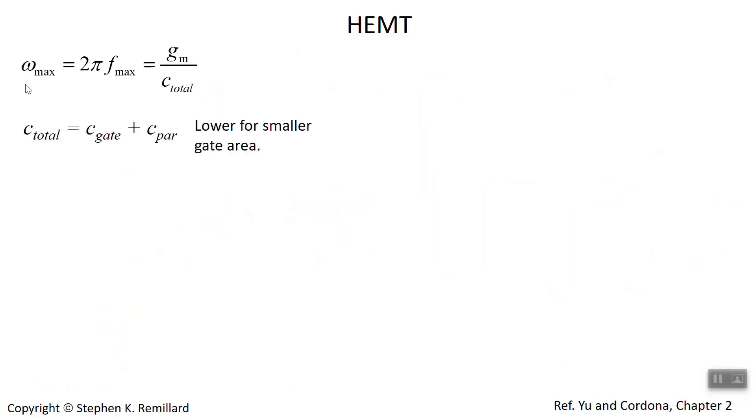The highest frequency that you can use a device, 2π f_highest, is the mutual transconductance divided by the total capacitance. This 1 over RC - the maximum frequency is 1 over RC. Instead of R, we use conductance upstairs: mutual transconductance over the capacitance. The total capacitance comes from the gate and parasitics. If you have a small gate capacitance, you can have a small total capacitance, which gives you a larger operating frequency. How do you get a small gate capacitance? By making that gate as short as possible.